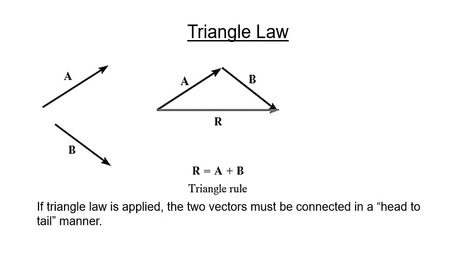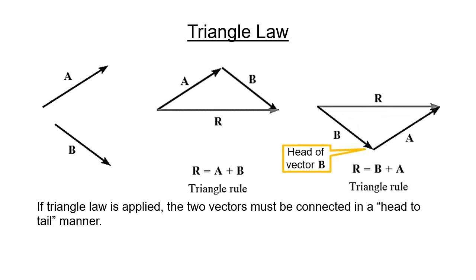In a similar approach, the resultant can also be obtained by connecting the head of vector B to the tail of vector A. The resultant is measured from the tail of vector B to the head of vector A. The resultant R equals to B plus A, making vector addition a commutative property.